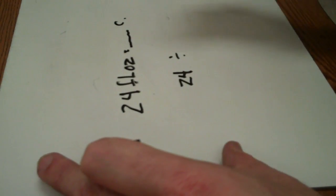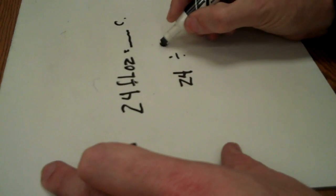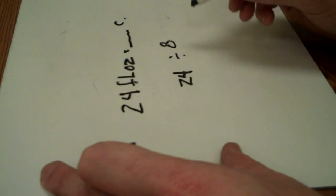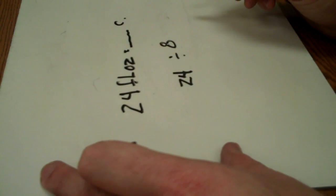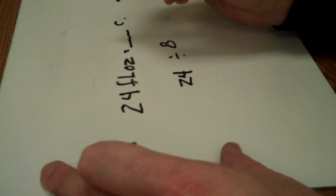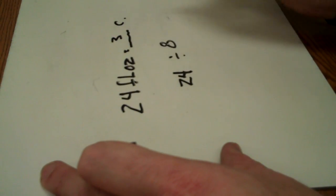Okay. So here's our other number, eight. So, how many times can eight go into 24? Well, eight times three is 24. So, 24 fluid ounces equals three cups.